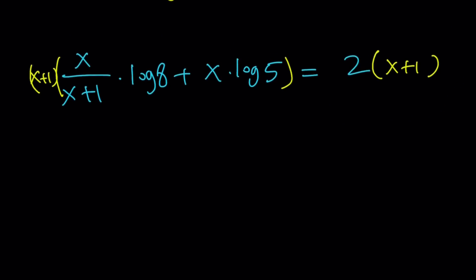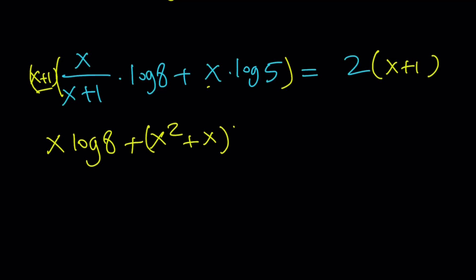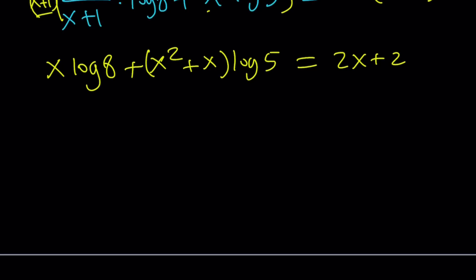Multiplying by x plus 1 cancels it out, so we get x log 8 plus (x squared plus x) times log 5, equal to 2x plus 2. We can simplify: since 8 is 2 to the third power, I can move the 3 to the front, giving 3x log 2.